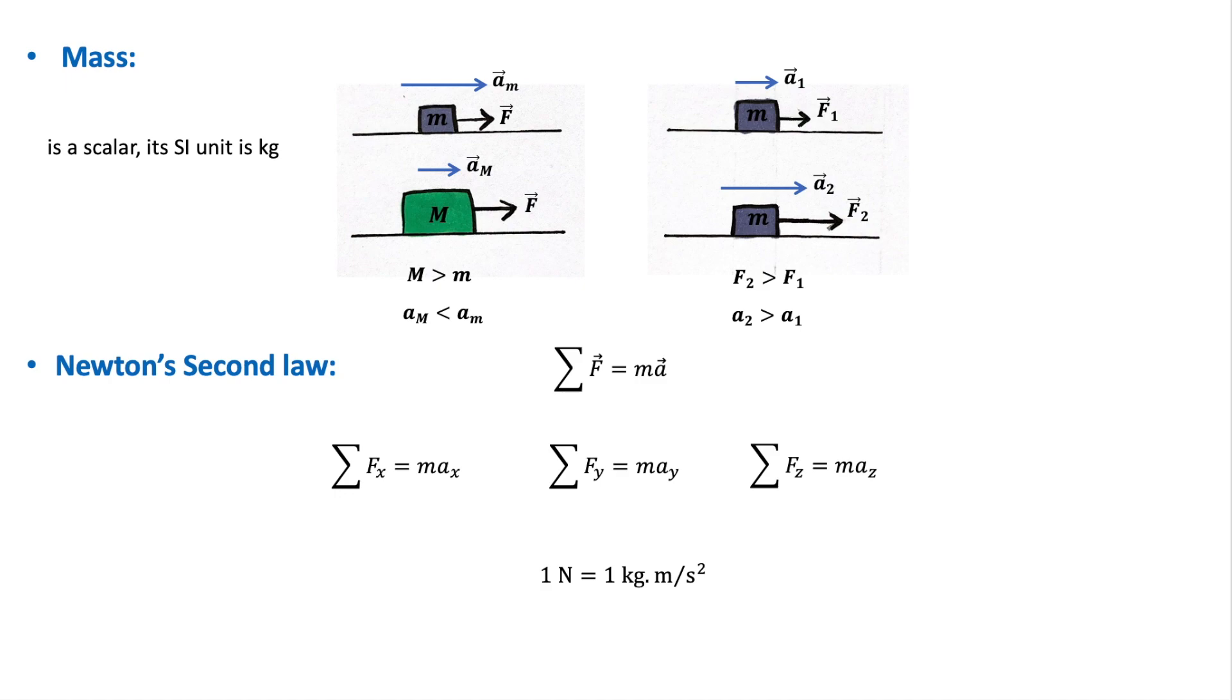From experiments and everyday experience, it is observed that a certain force produces different accelerations when applied to two different masses, and the acceleration depends on the quantity of matter contained in the object, and this quantity is known as the mass of the object. And so mass is a measure of inertia, and objects with large masses will have less acceleration than those of a lesser mass when subject to the same force.